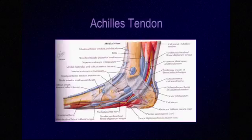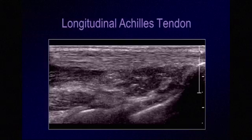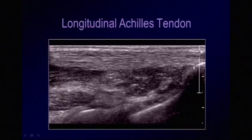The ankle is divided into four compartments and can be imaged in four compartments. For the posterior compartment, we will be discussing the Achilles tendon, which is outlined in blue in this Netter diagram. The appearance of a normal Achilles tendon is the same as with any tendon in the body. Tendons are hyperechoic, composed of fine parallel echogenic lines which represent collagen fibers. Here we are looking at the Achilles tendon from proximal to distal towards its insertion onto the calcaneus.